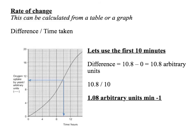A rate of change is something divided by the time taken — a rate is something per unit time. Rate of change: it's the difference divided by the time taken. The time could be in seconds, minutes or in this case hours. So the difference in the first 10 minutes.